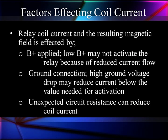Let's talk about the factors affecting coil current on any relay. It's a direct function of B+ supply — low B+ may not activate the relay because of reduced current flow. Ground can do the same thing: high ground voltage drop will reduce the current flow. It's all caused by unexpected resistance.